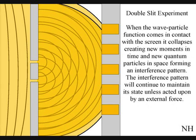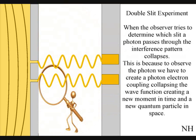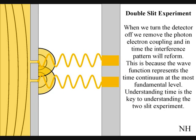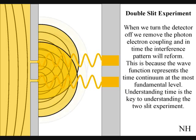This interference pattern will continue as time unfolds photon by photon within the isolated reference frame of the experiment — just as in Newtonian physics, only when an external force comes in contact with the light does the interference pattern collapse. When an observer tries to see which slit the photon went through by turning on an electronic detector, forming a new photon-electron coupling, the interference pattern collapses. This is because the photon-electron coupling represents a new moment in time — the moment of now within the reference frame. If the observer turns off the electronic detector, the interference pattern will reform over a period of time, photon by photon.